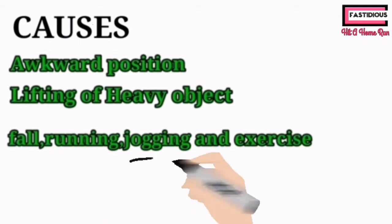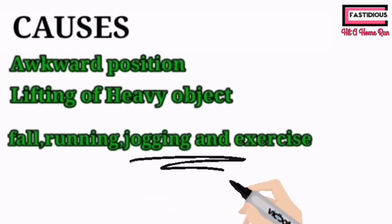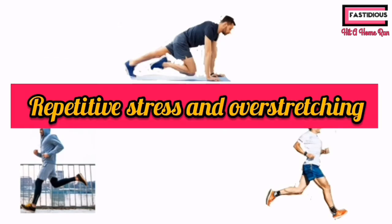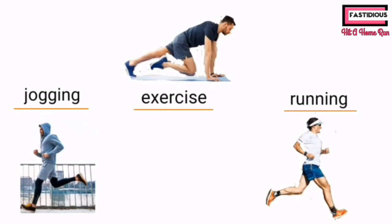The third cause involves falling, jogging, running, and exercise. Although running, jogging, and exercise are activities that keep a person active, sometimes one may have to deal with injury. Running and jogging injuries are mostly caused by repetitive stress. During exercise, sometimes due to repetitive stress and over-stretching, injury occurs. A fall also causes sprain — during a fall, the joint moves out of its normal range of motion, overextends, and as a result the ligament over-stretches and tears.